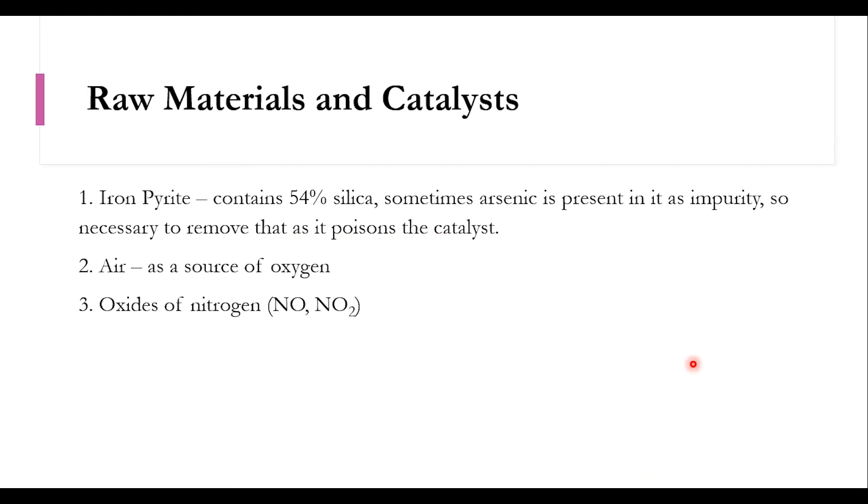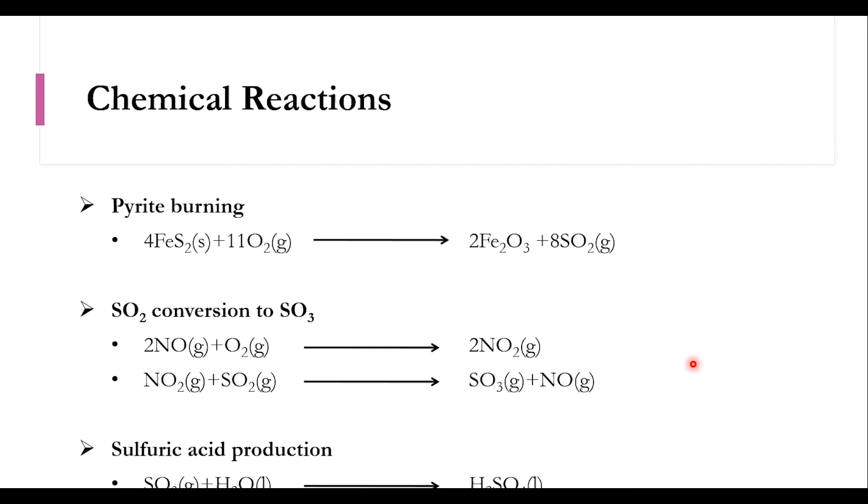The main steps of production are divided into four: number one is burning of pyrite, number two is SO2 conversion to SO3, number three is sulfuric acid formation, and number four is nitrogen oxides recovery, NO and NO2.